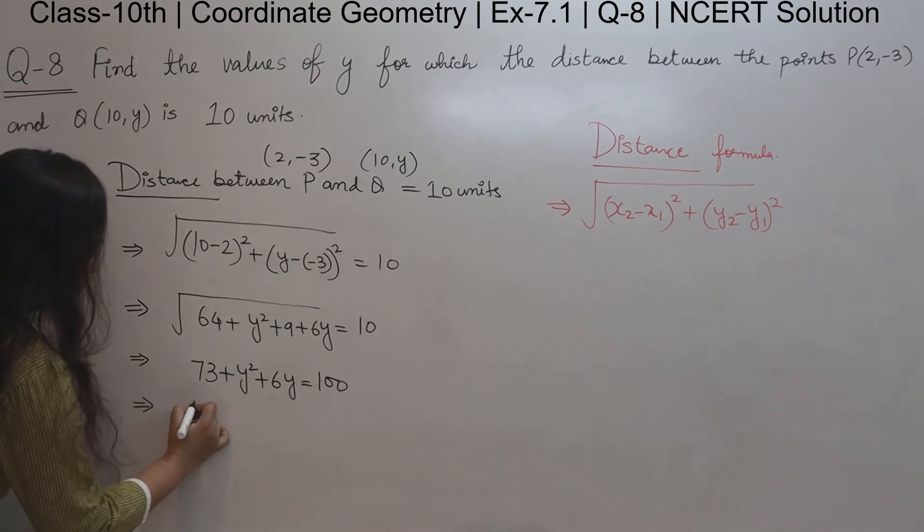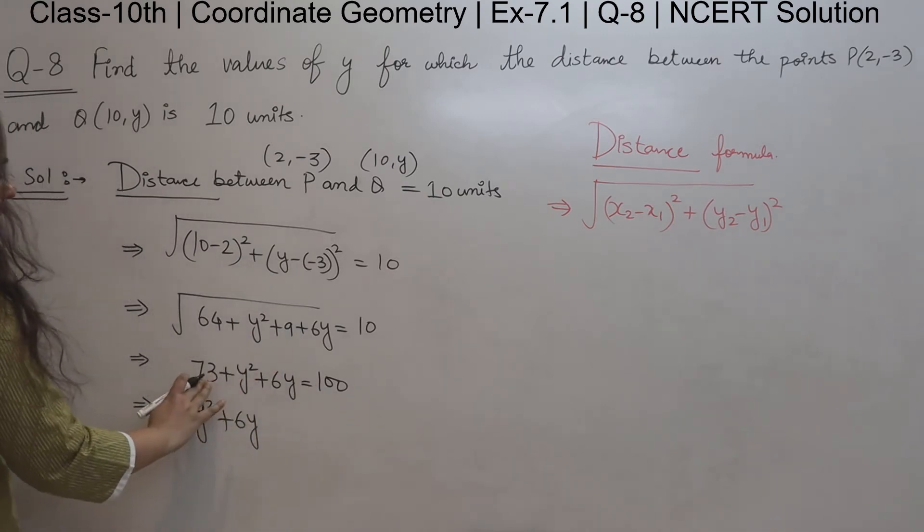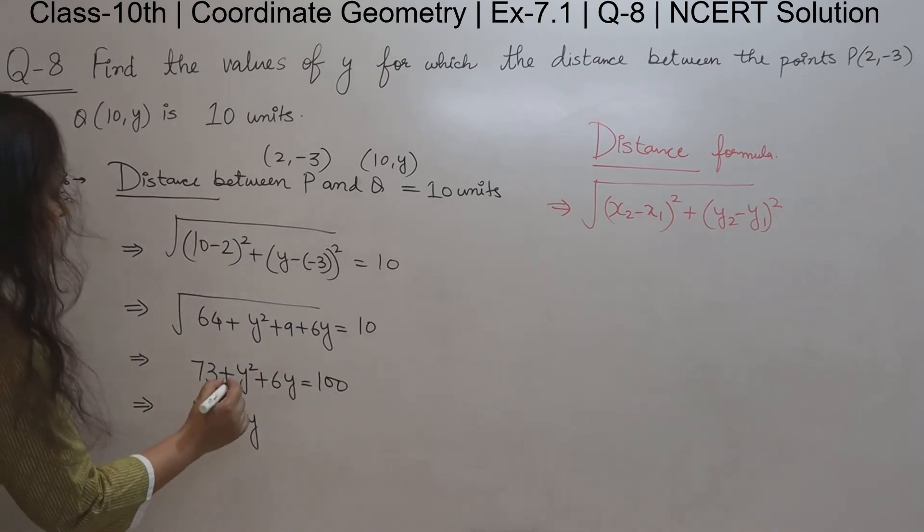Now you can see that we get a quadratic equation: y squared plus 6y plus 73 minus 100 gives us negative 27.